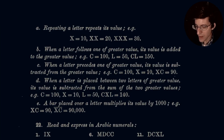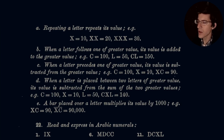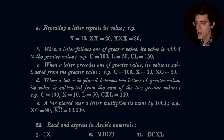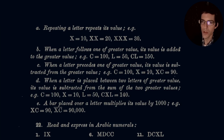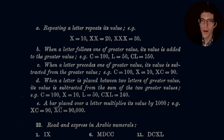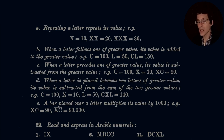When a letter precedes one of greater value, its value is subtracted from the greater value. For example, C is equal to 100, X is equal to 10. So if we have the smaller value X in front of C, we end up with 90. Take 10 away from 100.